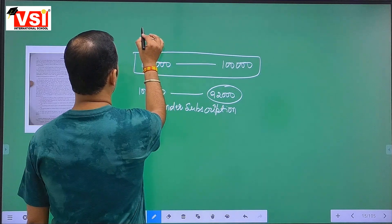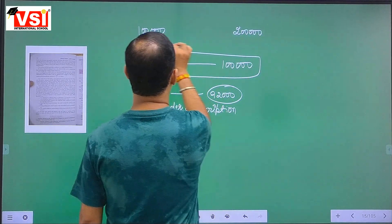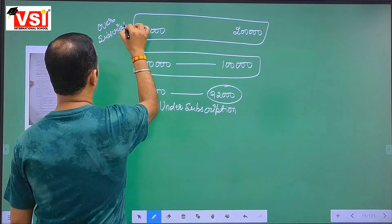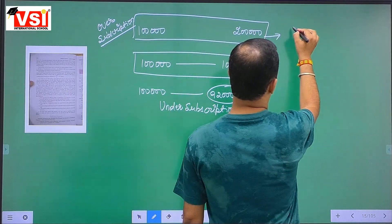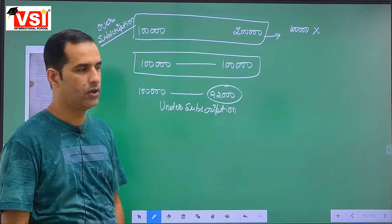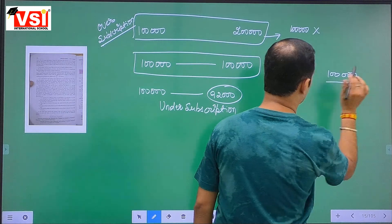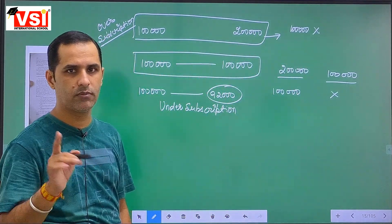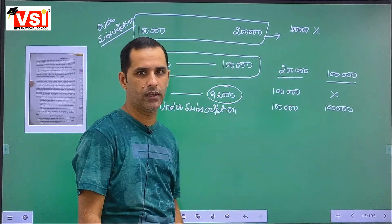If the company issued 1 lakh shares but received subscriptions for 2 lakh shares, this is called over subscription — an excessive number of shares have been applied for. In this case the company can either issue letters of regret to 1 lakh applicants, rejecting their applications and refunding their money, and allot the full 1 lakh shares to the remaining 1 lakh applicants; or it can allot on a proportionate basis.